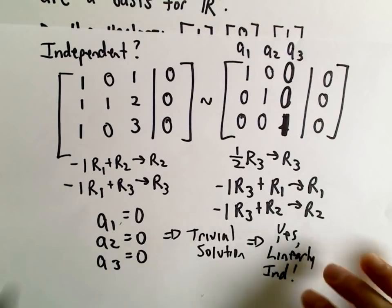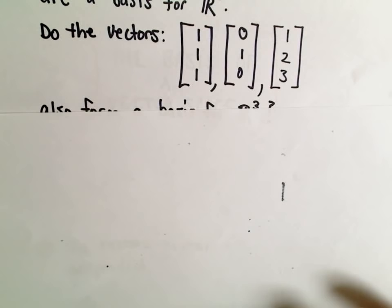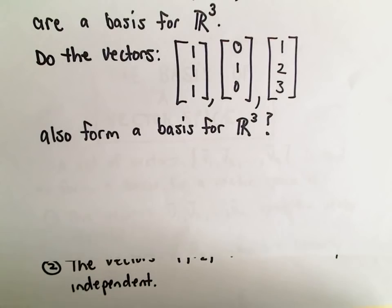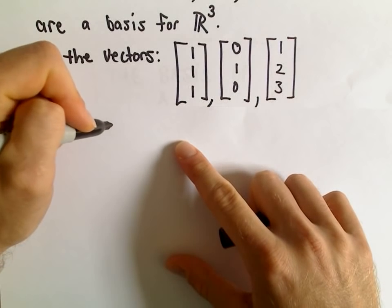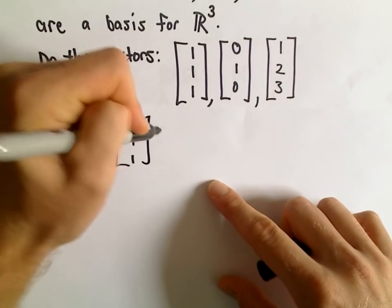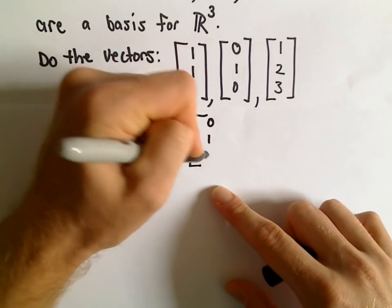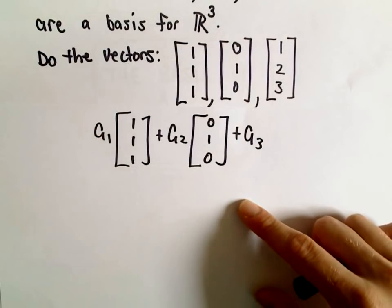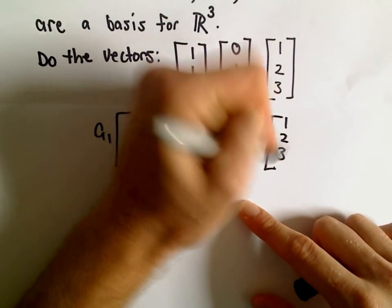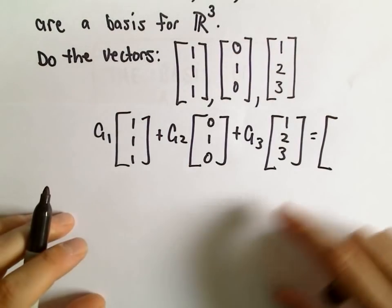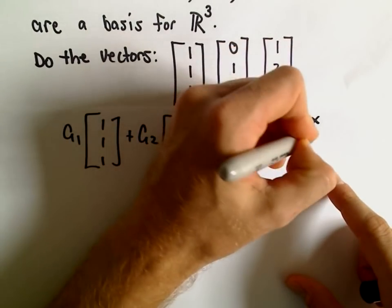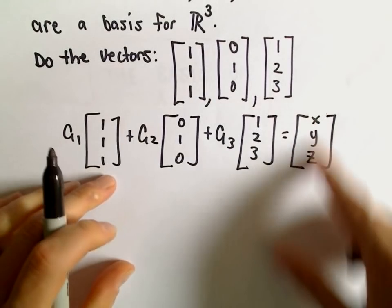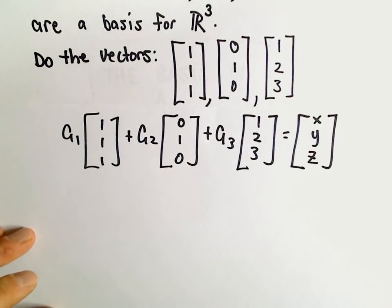Okay, so they are linearly independent, so one thing's down. Now, let's check if they span all of r3. Okay, so do they span all of r3? And again, what we're looking for, we want to be able to take linear combinations. So a1 times 1, 1, 1 plus a2 times the vector 0, 1, 0, and a3 times the vector 1, 2, 3. And what we want to be able to do, if we can use these vectors to span all of r3, it says we should be able to figure out constants so that we get any old vector x, y, and z that we want. Okay, so we have to justify that we can do this.